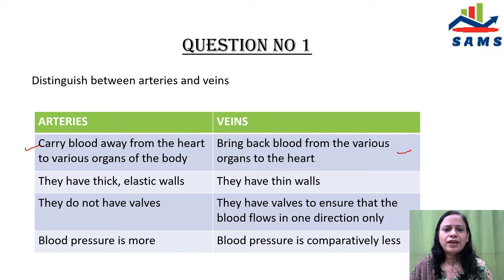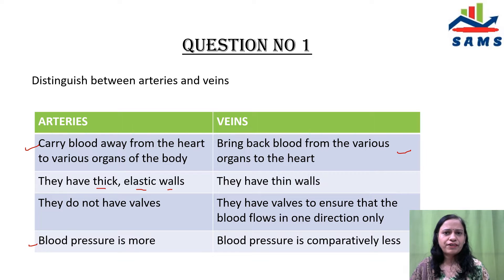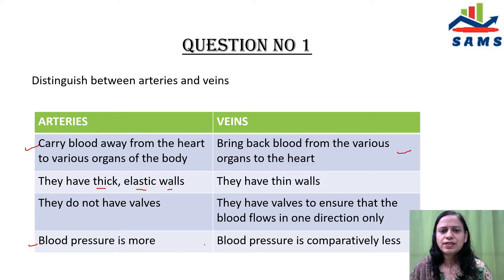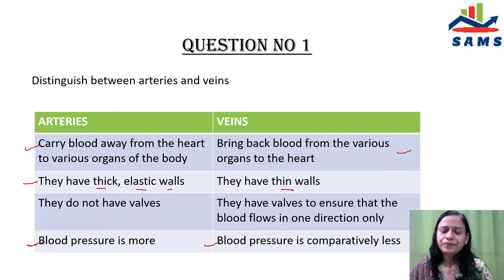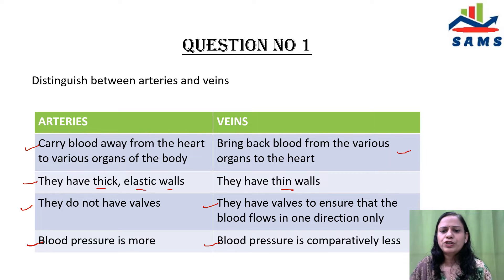The second point is that arteries have thick elastic walls, because the blood pressure is more in arteries, so the walls are thick and elastic. Whereas in the case of veins, the blood pressure is comparatively much less, so they have thin walls. The next point is that arteries do not have valves, whereas veins have valves to ensure that blood flows only in one direction.